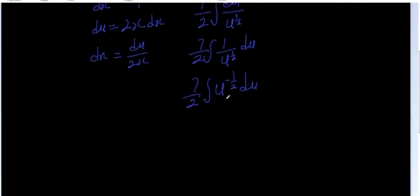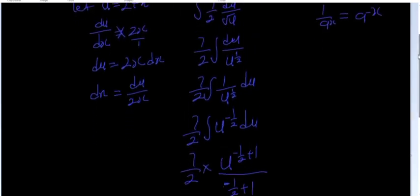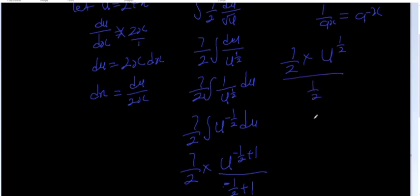Now you can integrate with respect to u. You have 7 over 2 times u raised to power negative half plus one, divided by negative half plus one. Negative half plus one gives positive half, so you have 7 over 2 times u raised to power half, divided by half.